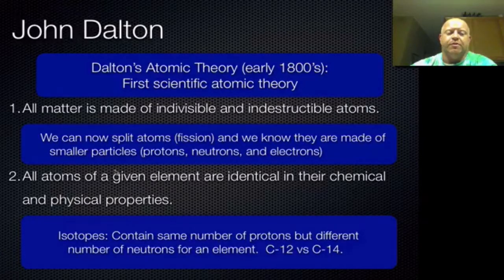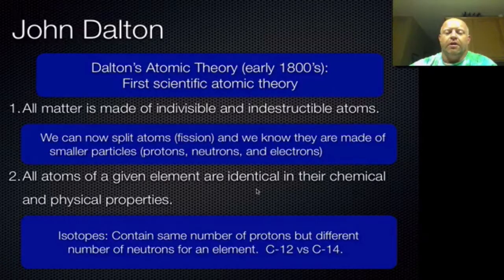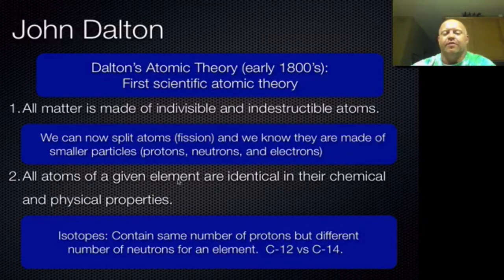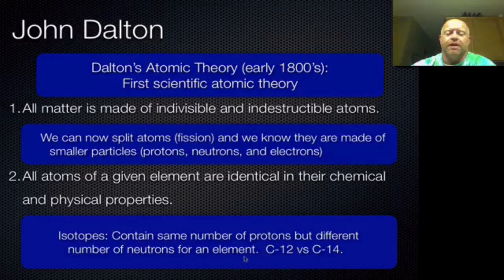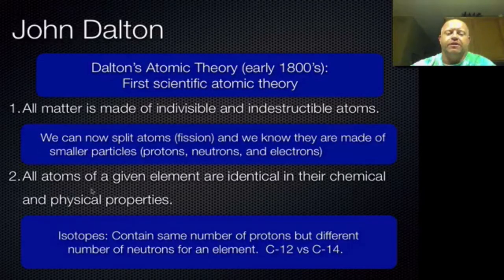His statement doesn't really talk about isotopes at all. You could easily fix this and say that all atoms of a particular isotope of an element are identical. Carbon-12 is identical to other carbon-12 as far as we know, but carbon-14 and carbon-12 are not identical chemically because they have different numbers of neutrons. So the first two parts aren't 100% accurate in terms of what we believe now, but they are still very good baseline information for his theory.